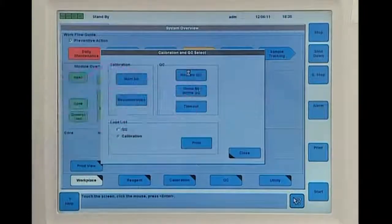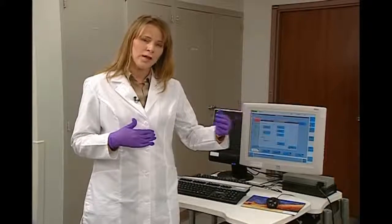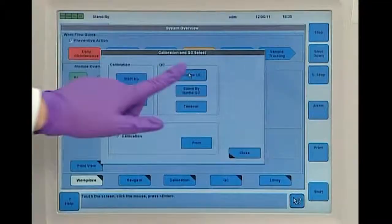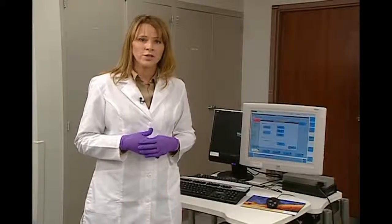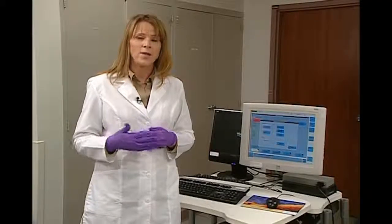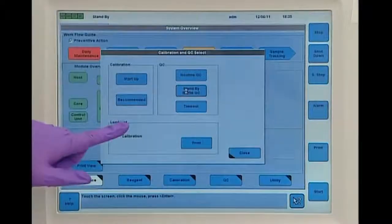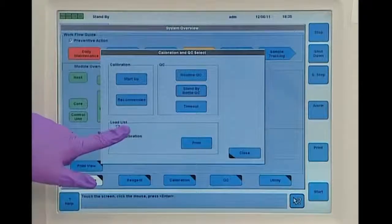In this screen, we can also order our QC. We can select the routine QC button, which is going to order QC on our entire platform for all the packs that we're currently using. And we can also press the standby bottle QC. And this is going to order QC on all the standby bottles that we might have on. And we can also print the QC load list from this screen.